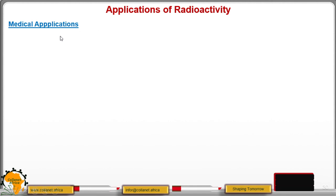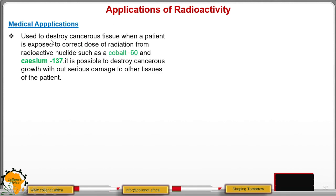We start with the medical application. One, radioactive isotopes can be used to destroy cancerous tissues. This will only work if the patient is exposed to the correct dose, because if you overexpose the patient, those radiations can kill even the useful tissues or cells in the body.